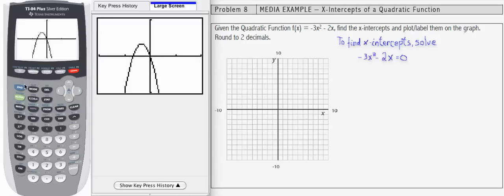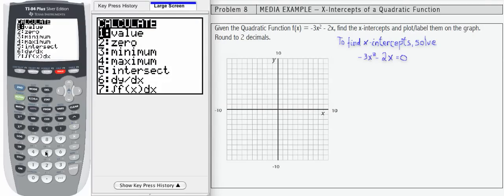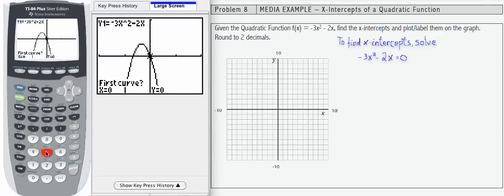We're going to use our second calc 5-intersect process that we've used before. Notice your screen may look different. Mine has a cursor on the right-hand side. If I hit enter to find the intersection 3 times, it's going to give me the first intersection of 0, 0.